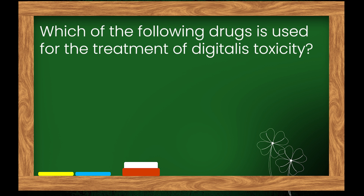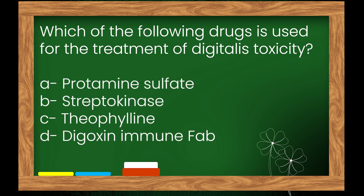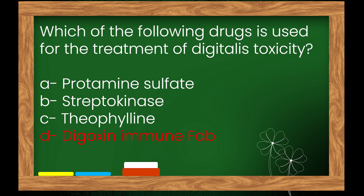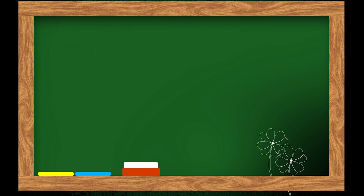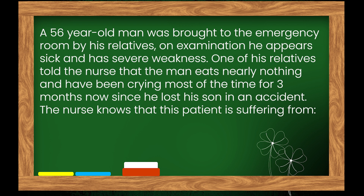Question 2: Which of the following drugs is used for the treatment of digitalis toxicity? Options: A. Protamine sulfate, B. Streptokinase, C. Theophylline, D. Digoxin immune Fab. The right answer is option D: Digoxin immune Fab.